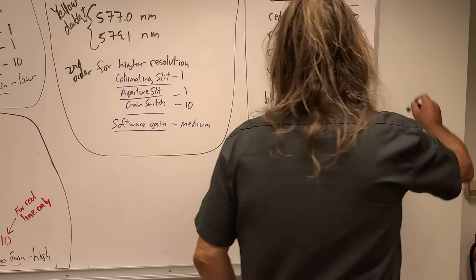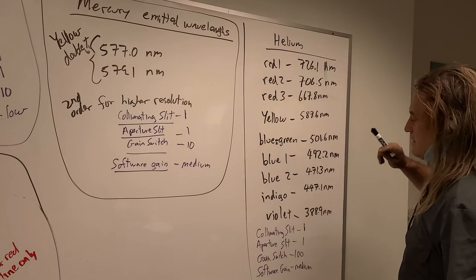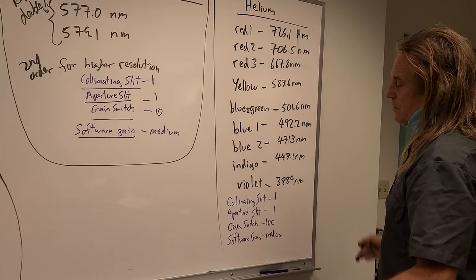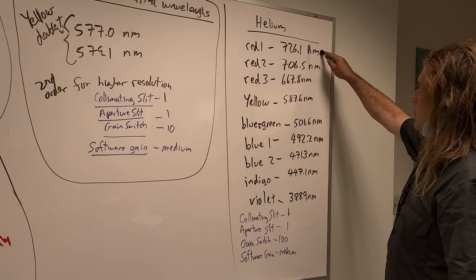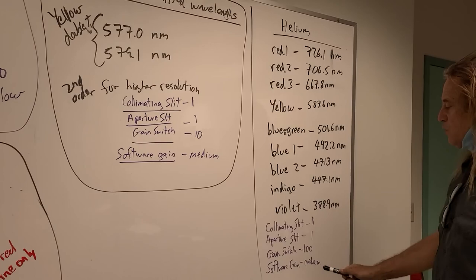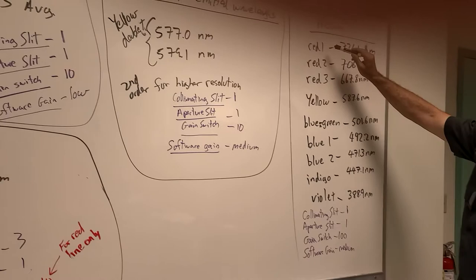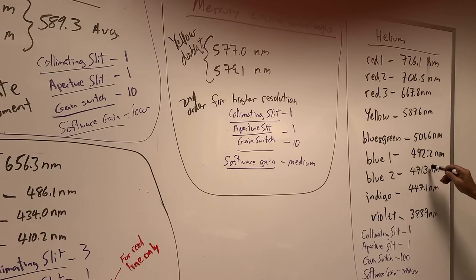When we look at the helium gas discharge tube, we've got a lot more lines. Since there are more colors, the energy is being spread out into more states. Each wavelength state is going to have less energy, so less intensity. That's why the gain switch will be at 100 (electronic gain), software gain at medium, and the collimating slit at one. Each wavelength will be seen at specific angles in the spectrometer.